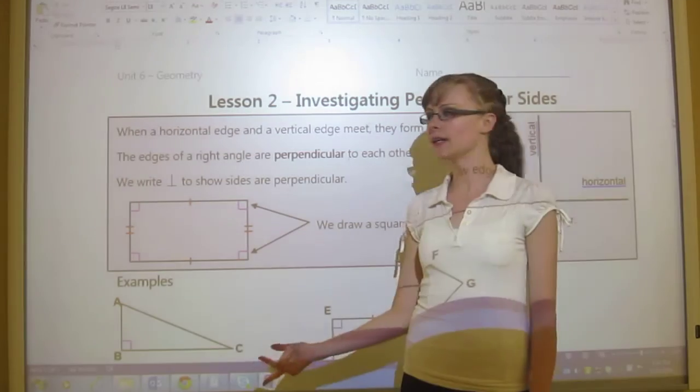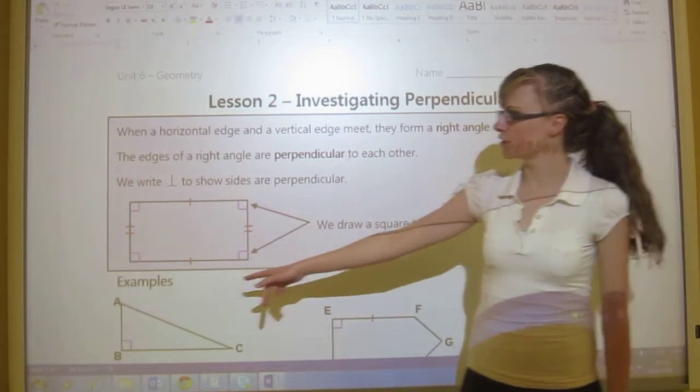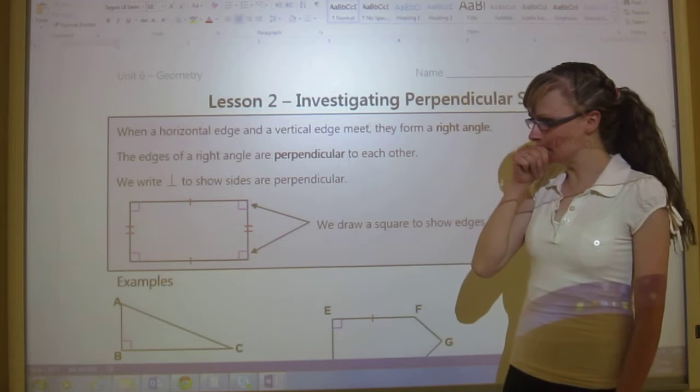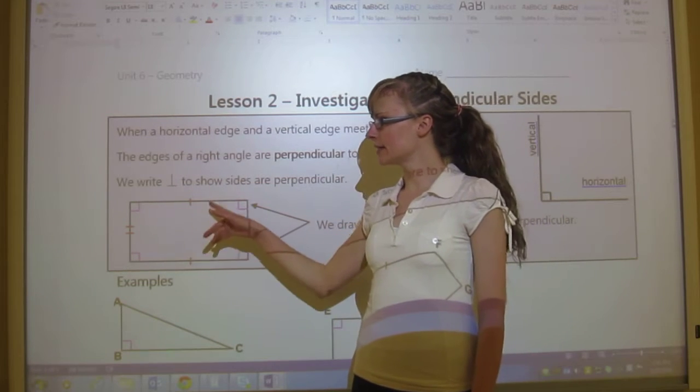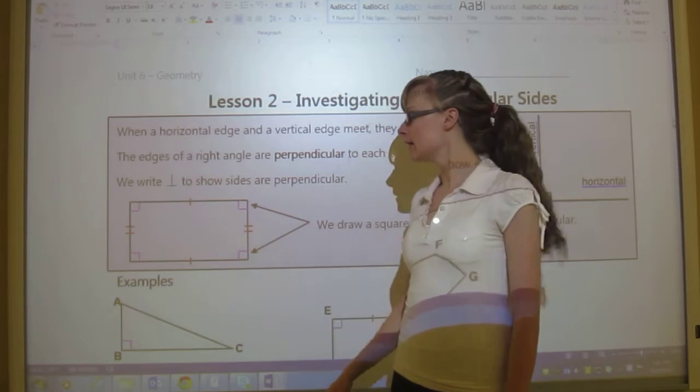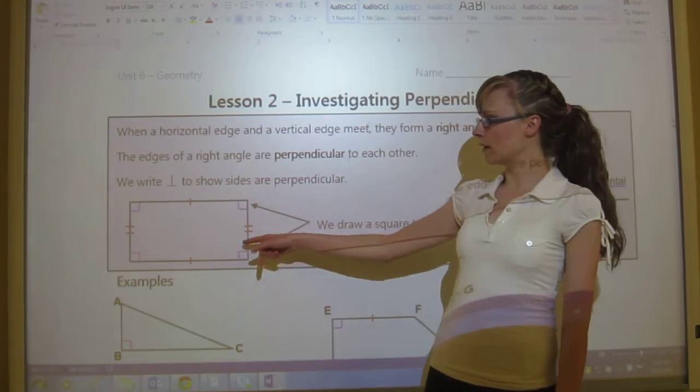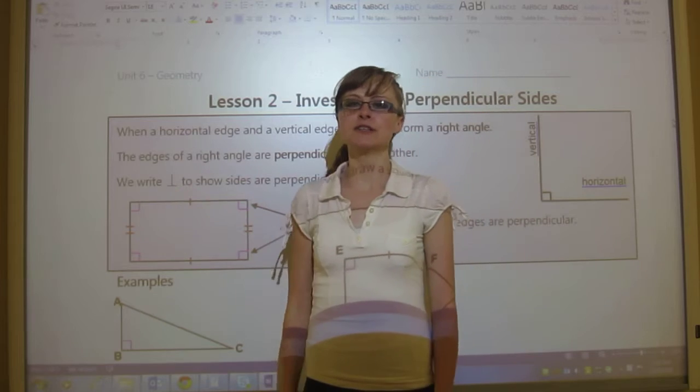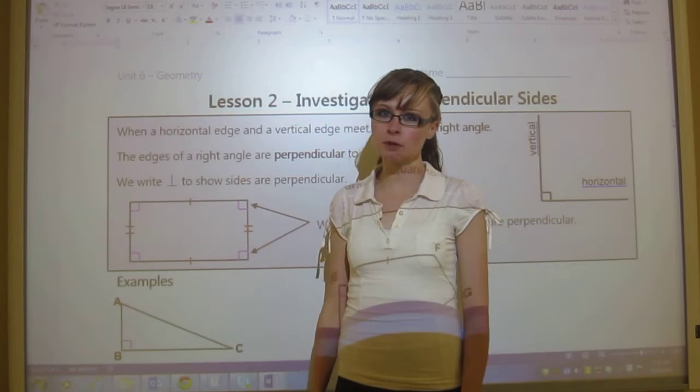And we'll look at that down here. But we've got a picture here and it has the hatch marks to show that the top and bottom are the same length, and the sides are the same length. But it also has these square marks in each of the corners, to show that each one of those corners is perpendicular.